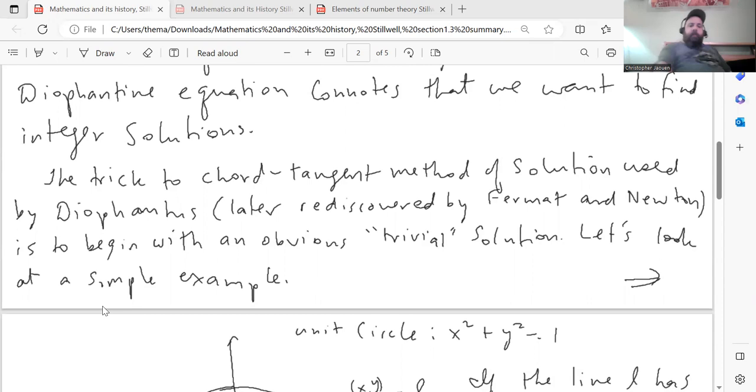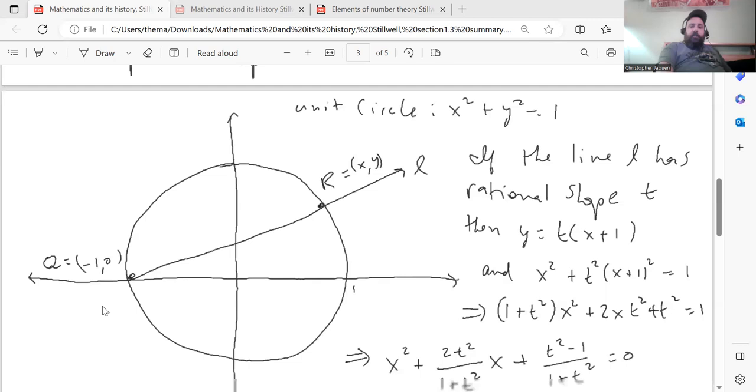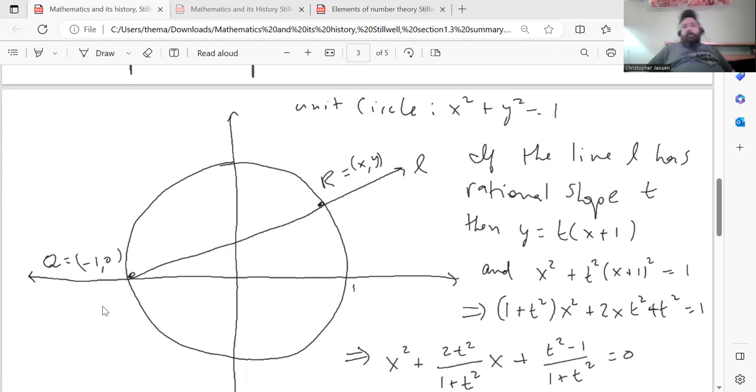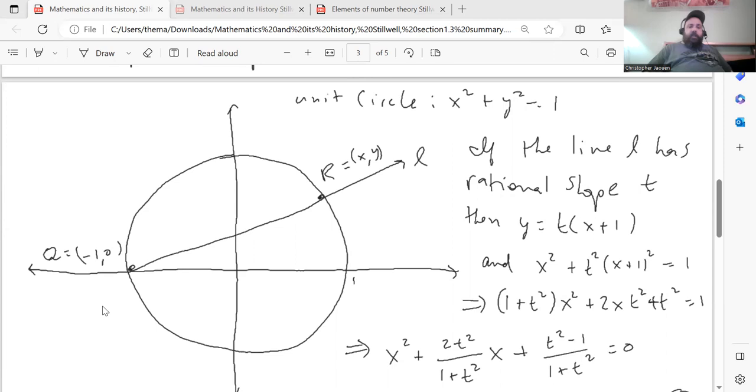And just to give an example of that procedure, we're going to find formulas for finding rational points on the unit circle. So from your previous math experience, you should know that the equation of the unit circle is x squared plus y squared equals 1. So if you look at the picture here, there is an obvious solution to this equation.